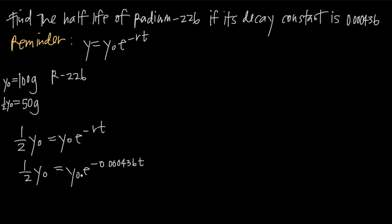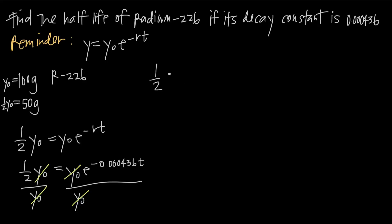Now we divide both sides of the equation by y sub-zero. Dividing both sides by y sub-zero doesn't change the value of the equation, but it cancels y sub-zero out, leaving us with one-half on the left-hand side equal to e to the negative 0.000436 times t. Now we've got just the single variable t left, which is what we need to solve for — that's going to give us the half-life.